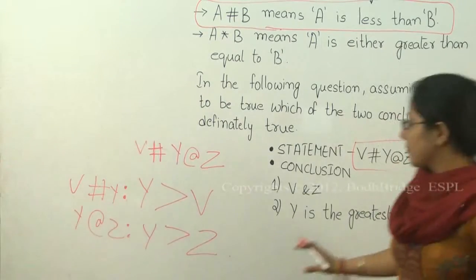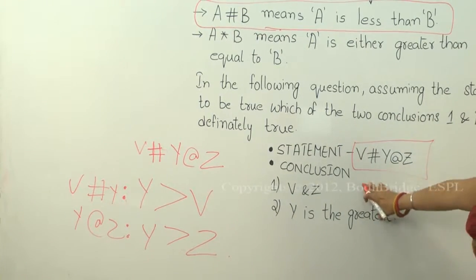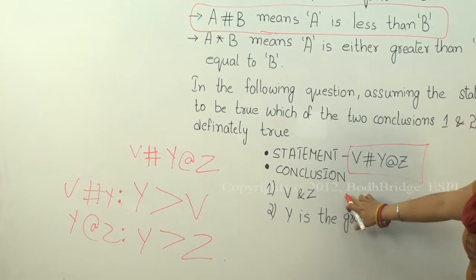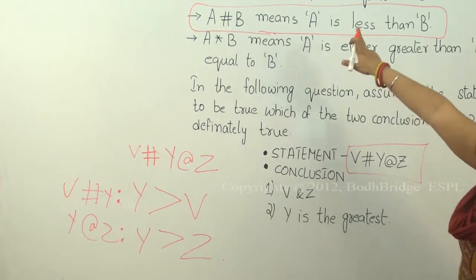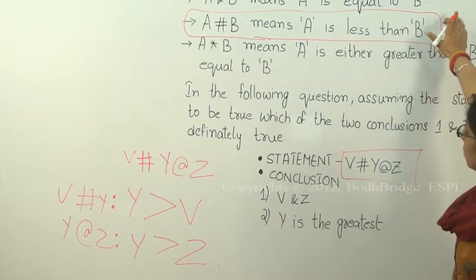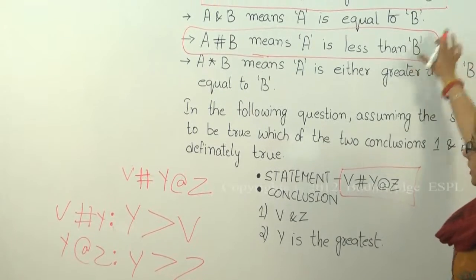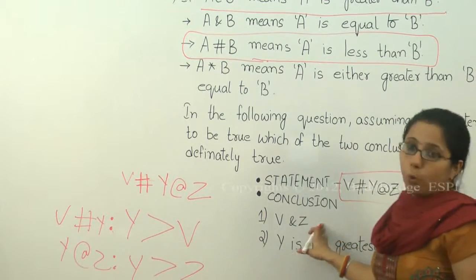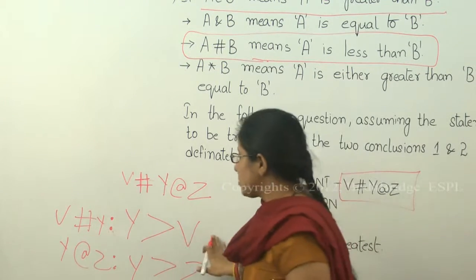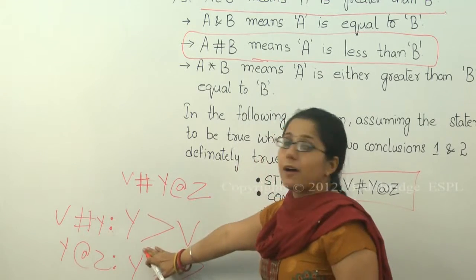Now the conclusion is 'V and Z' means V is equal to Z. Is it true? No, V is not equal to Z. We cannot say from the above statement.